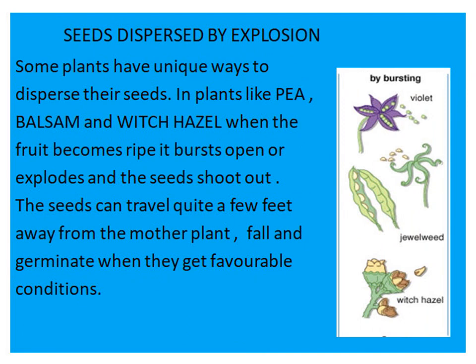Seeds dispersed by explosion. Some plants have unique ways to disperse their seeds. In plants like pea, balsam, and witch hazel, when the fruit becomes ripe, it bursts open or explodes and the seeds shoot out. The seeds can travel quite a few feet away from the mother plant, fall, and germinate when they get favorable conditions.